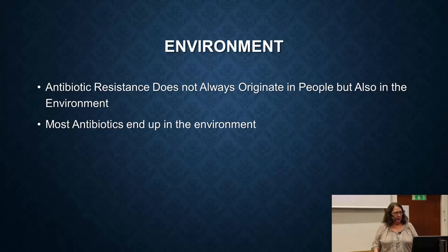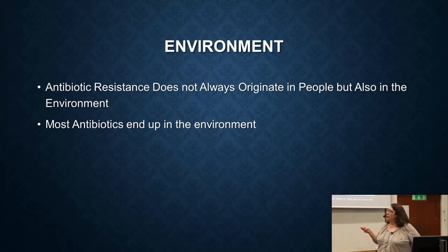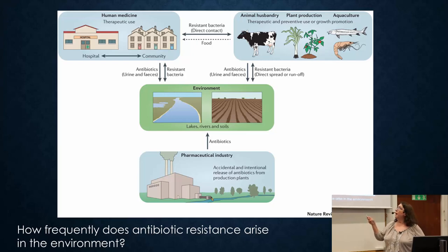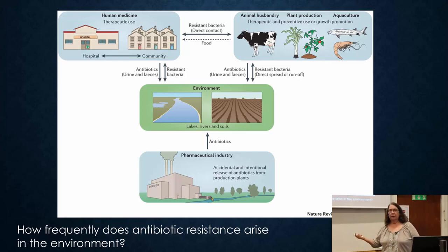The next theme is the environment, which Joachim already discussed at length. We need to know how frequently antibiotic resistance is occurring in the environment and how to prevent it. Sources of antibiotics include hospitals, people, agriculture, and pharmaceutical plants — all contributing to resistance to varying degrees, though we don't yet know exactly how much.